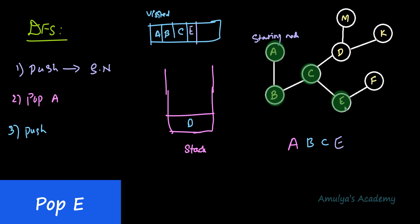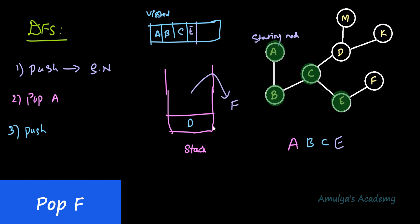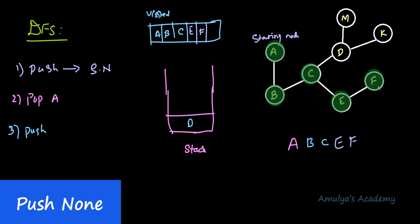Next we push all unvisited adjacent nodes of E. C and F are adjacent to E; C is already visited, so we push F. We then pop F — F is not visited, so we visit it and add it to the visited list. Now we need to push all unvisited adjacent nodes of F, but E is the only adjacent node and it's already visited. We've reached a dead end, so there is nothing to push.